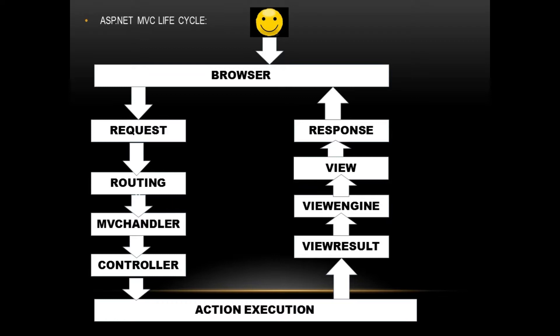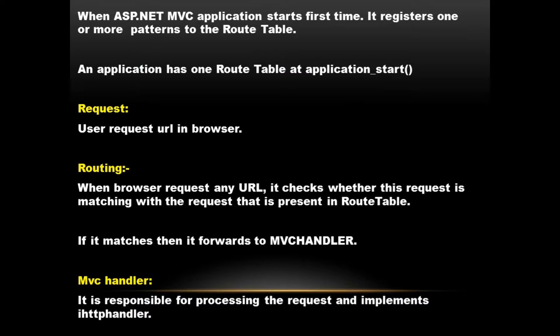Now let's jump into the detail of each block of the MVC lifecycle. First, when an ASP.NET MVC application starts, it loads the route table in the application start method of Global.asax. It registers the default patterns in the route table at application startup. The first block is the user request, where the user enters any URL in the browser, which then goes to the routing table.